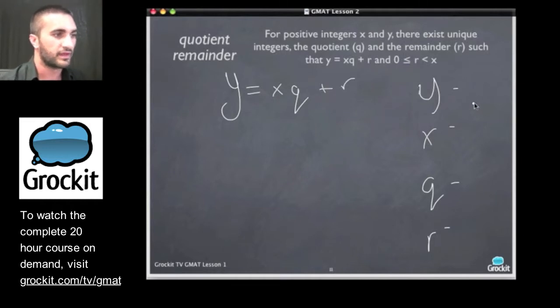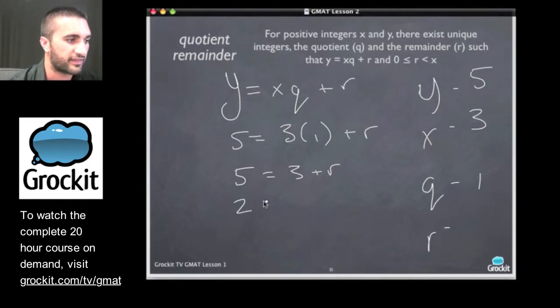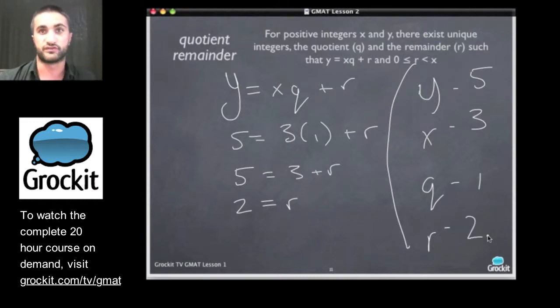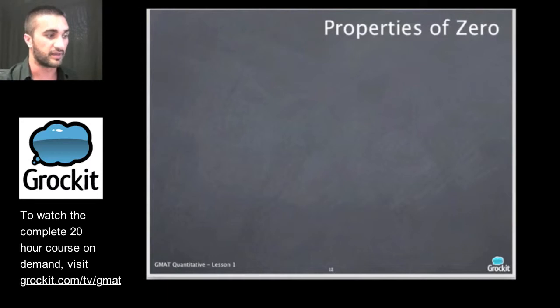We have y equals xq plus r. Let's say that y is 5, x is 3. So we get 5, and we said q was 1 before. So we have 3 times 1 plus r. We get 5 equals 3 plus r. If we subtract 3 from each side, we get a remainder of 2. And this set of numbers is valid to use if we're dealing with a plugging in or making up numbers situation like this.